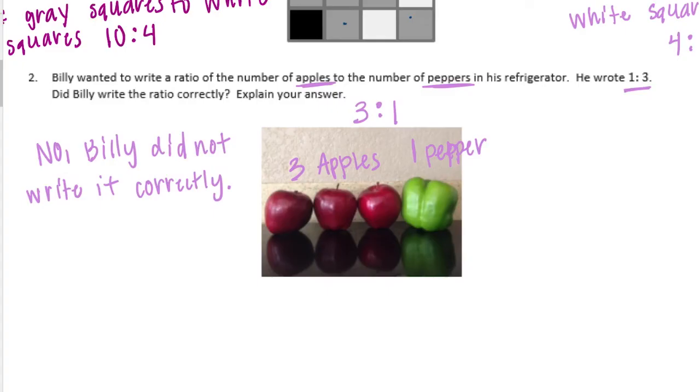We would say that in the ratio or in the description, apples come first. The number of apples comes first in the ratio.